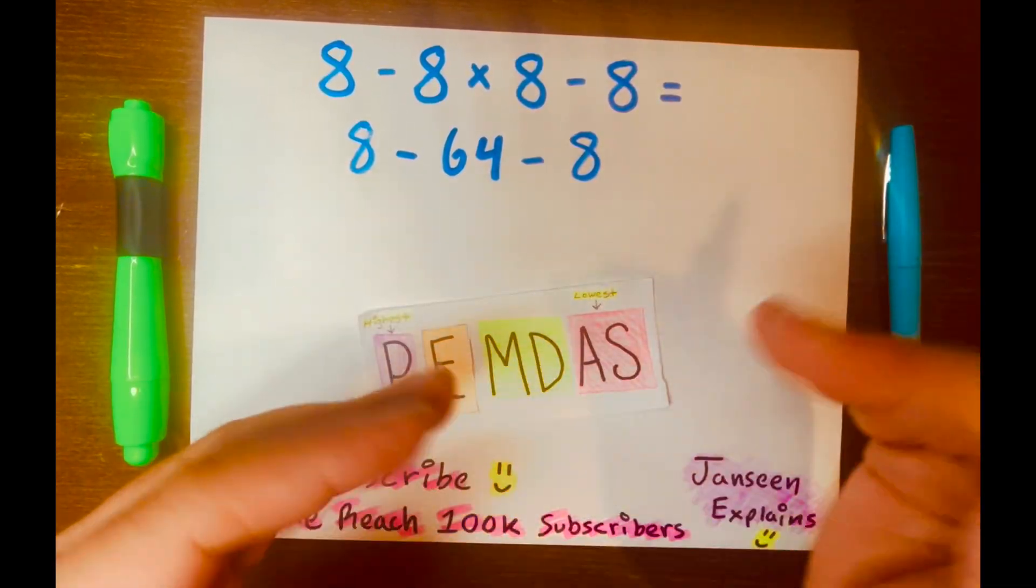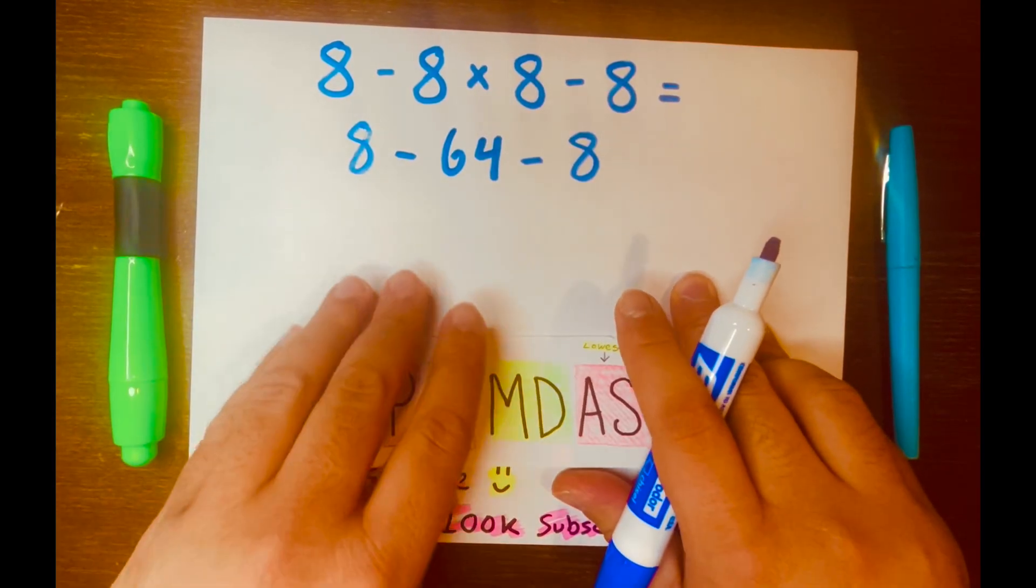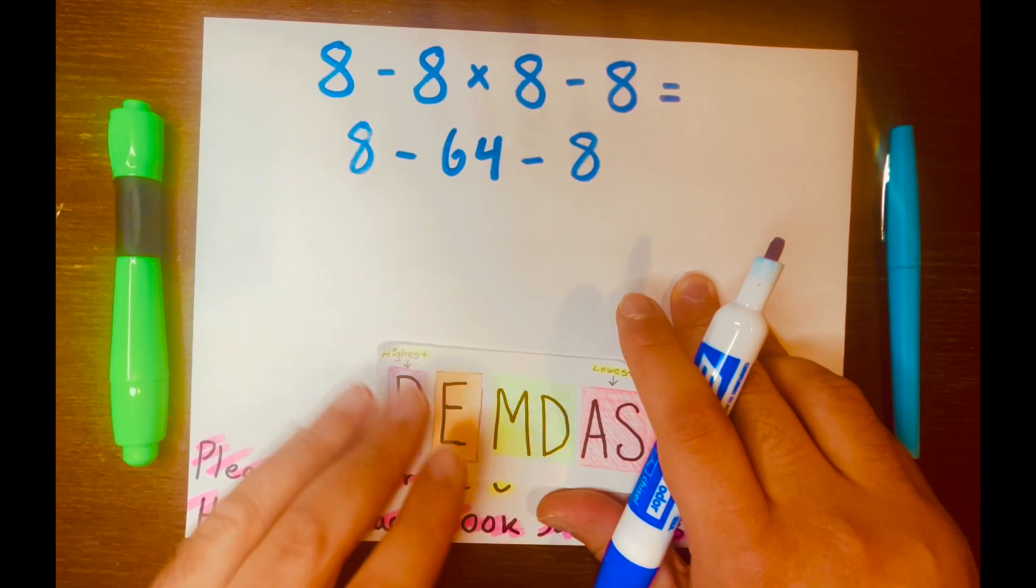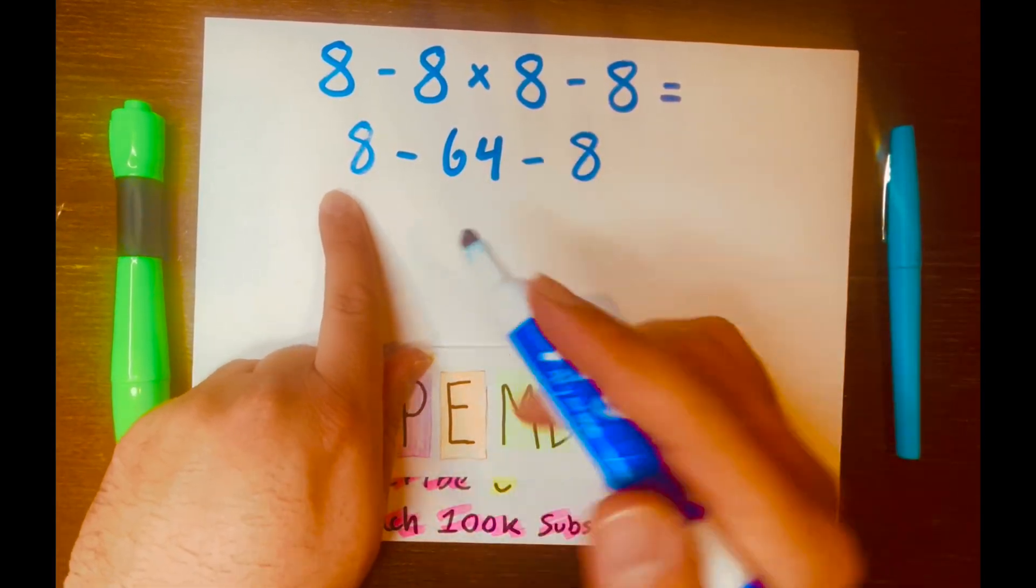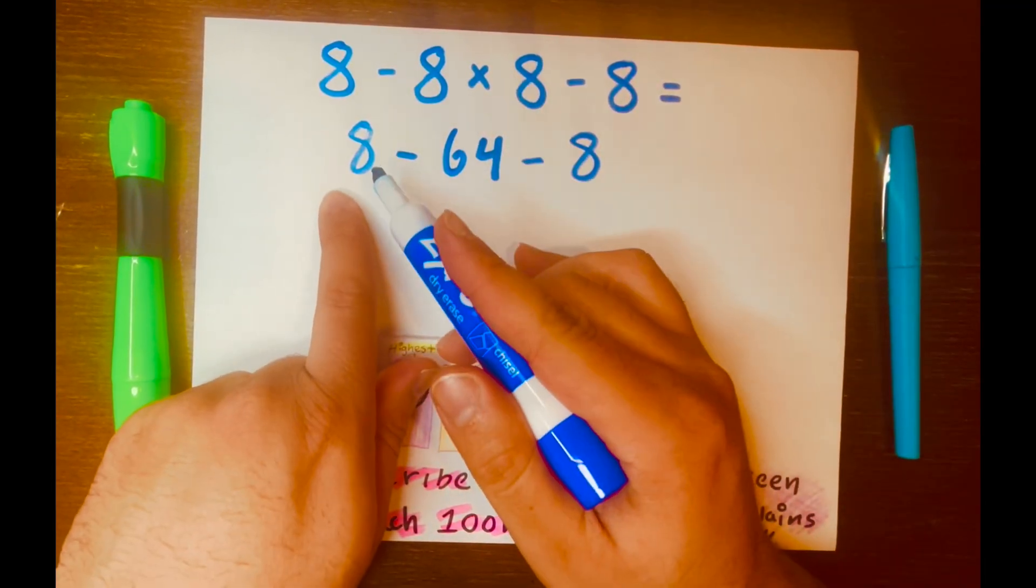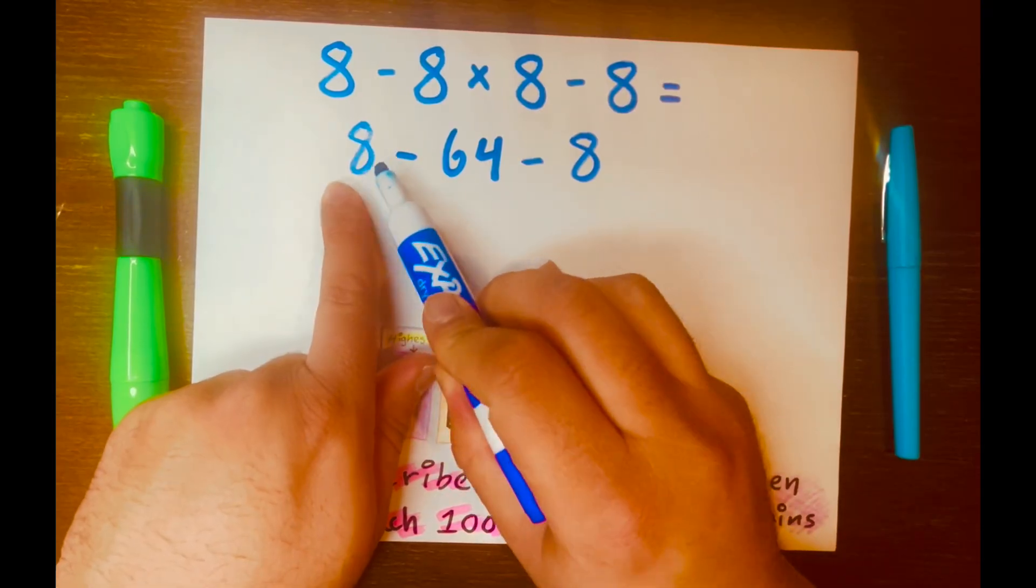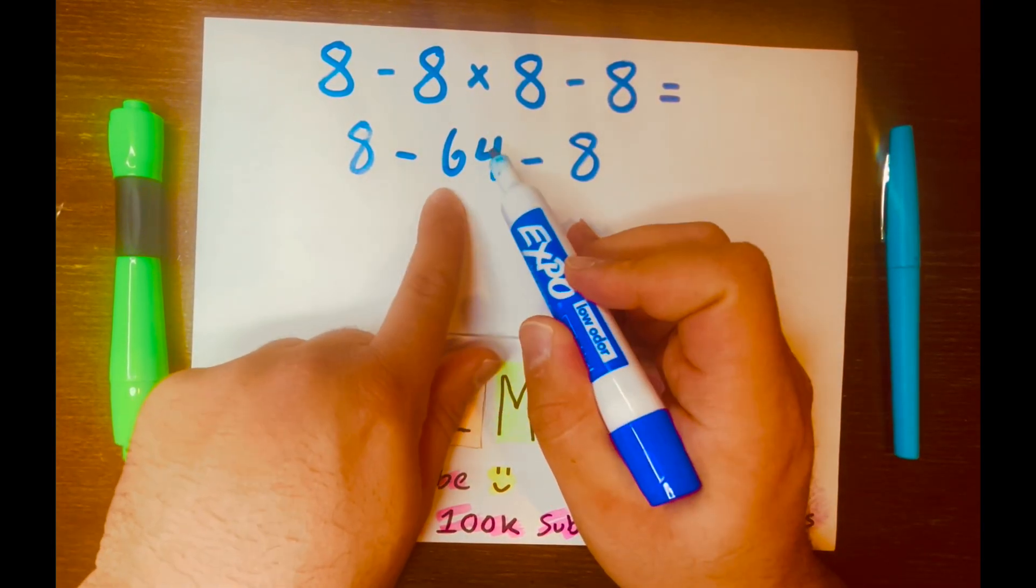And I know some of you can do this in your head and give me the answer right away. But to make the math easy, not just easy, but fun, let's think about a number line. If you start, I'm not going to draw a number line. That would be too many numbers. If we start on the number line with 8, positive 8, minus 64.